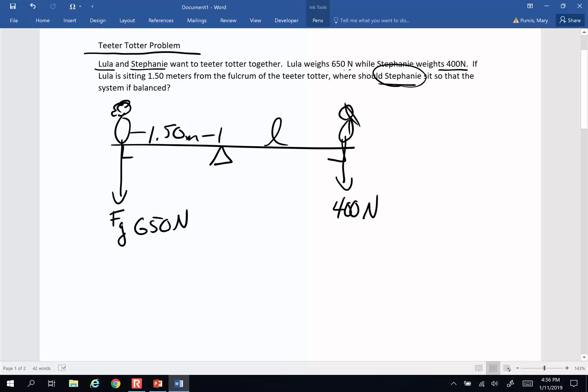Now, when you're doing these, if you want a system to be stable, the sum of the torques on the system have to equal zero. Which means all of the clockwise or negative torques are going to have to equal all of the counterclockwise or positive torques.